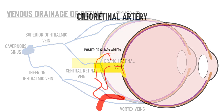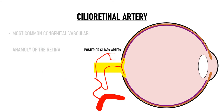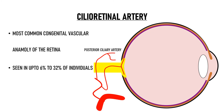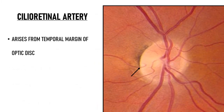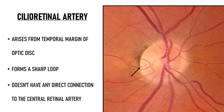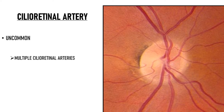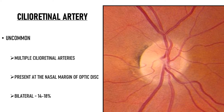The cilioretinal artery is the most common congenital vascular anomaly of the retina, seen in up to 60–32% of individuals. It mostly arises from the posterior ciliary arteries, but sometimes from the choroid. On fundoscopic examination, it is seen arising from the temporal margin of the optic disc and forms a sharp loop before extending outwards — this loop is an important characteristic feature. The cilioretinal artery has no direct connection to the central retinal artery. Uncommonly, multiple cilioretinal arteries may be present in one eye, and rarely it can be found at the nasal margin of the optic disc. Bilateral cilioretinal arteries are seen in about 14–18% of cases.